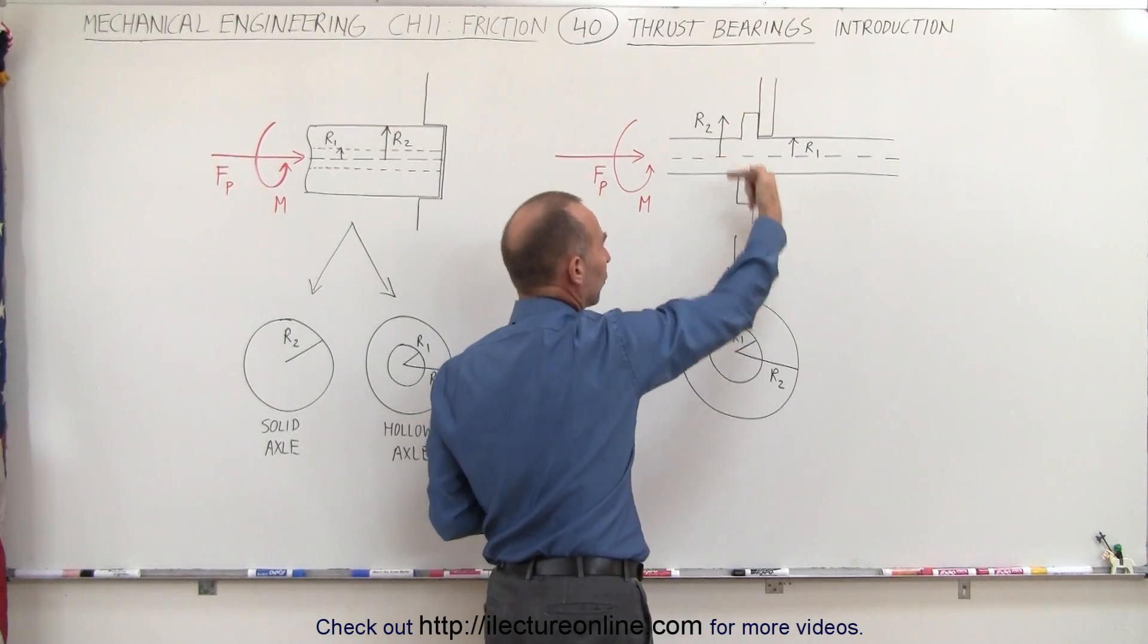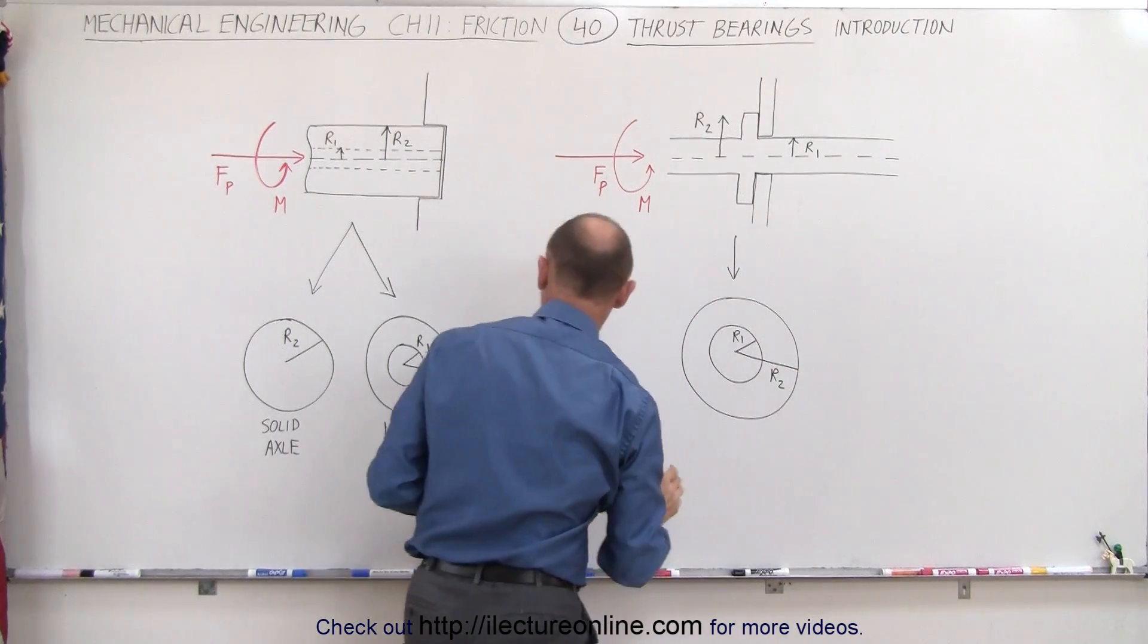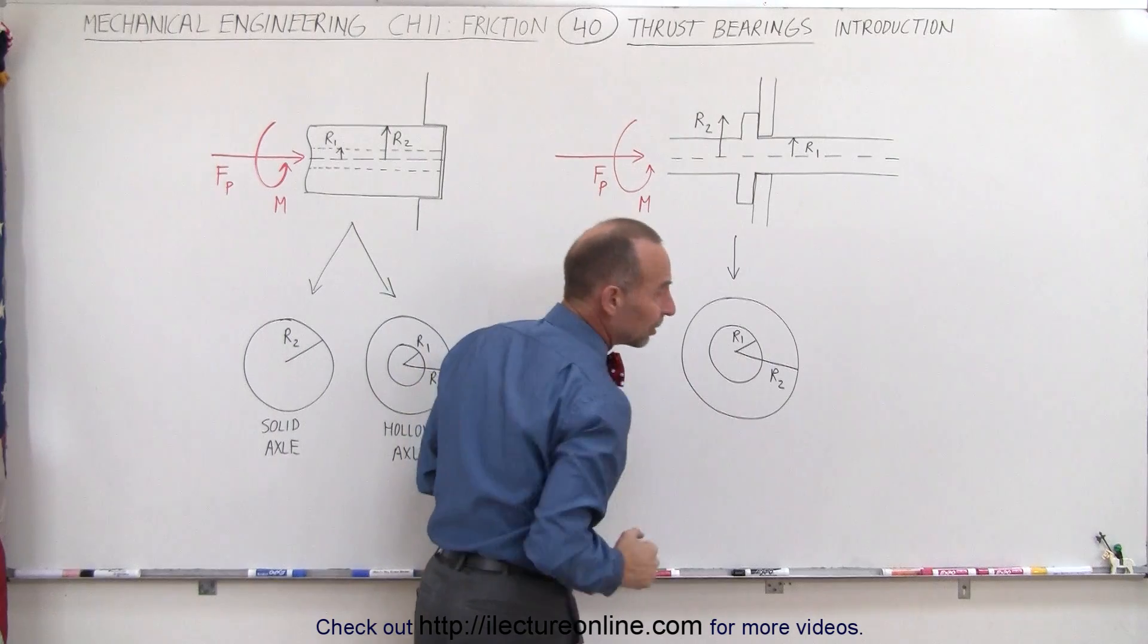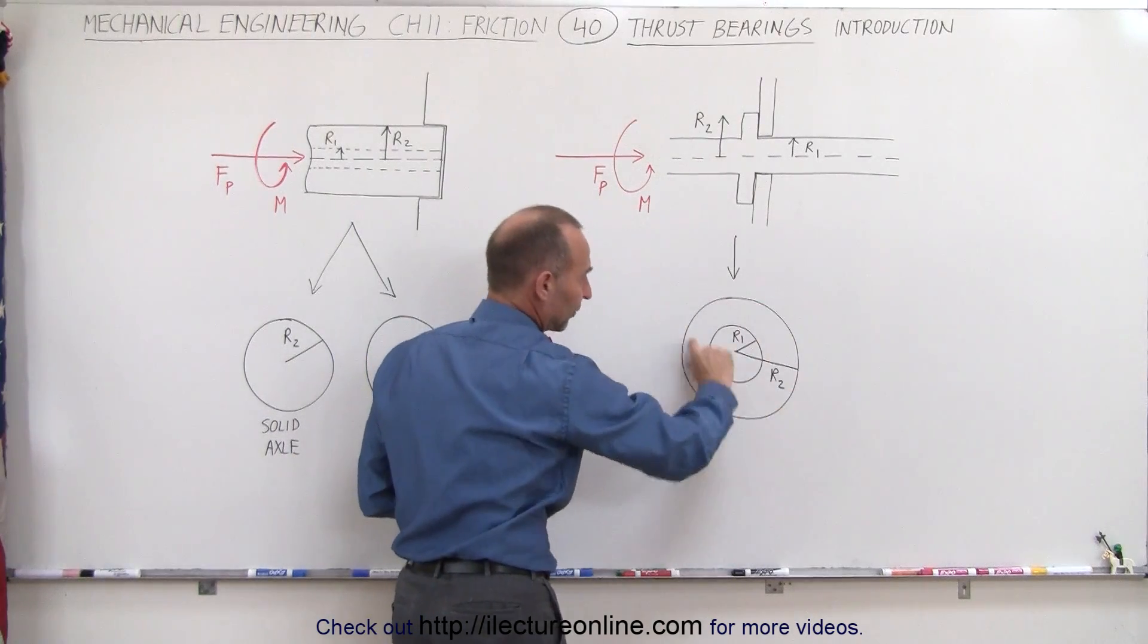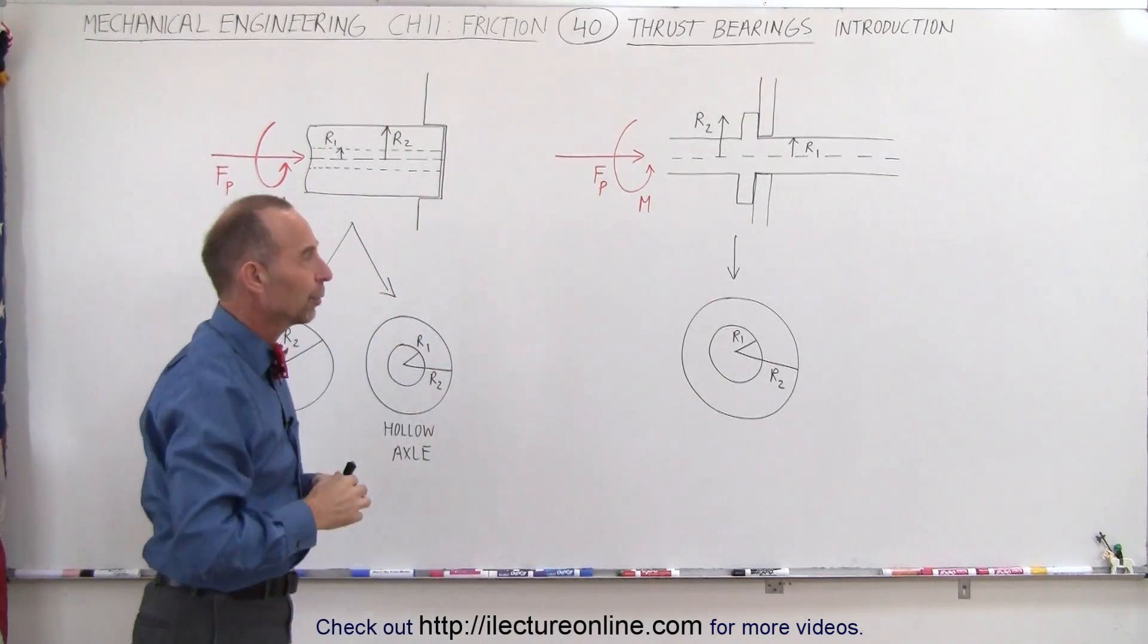Now as the axle rotates, it's the surface of the sleeve that's causing the friction to exist and it kind of looks like a hollow axle like this where you have an inner and outer radius. It's only this portion of the axle, the sleeve portion, that actually causes the friction to exist as the bearing rotates.